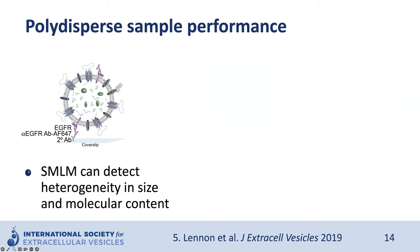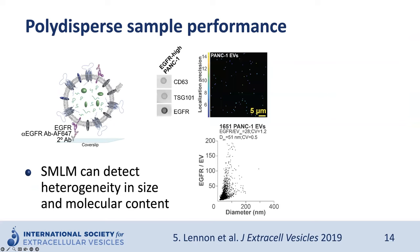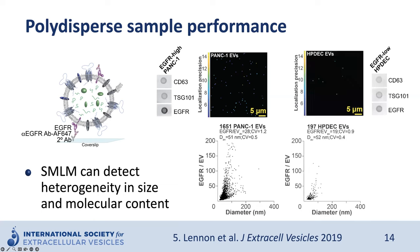SMLM provides a readout on two key features: EV size and detected molecular content. The combined information can be used to define EV heterogeneity. For example, we imaged EGFR-enriched vesicles detected using a fluorescently labeled antibody against EGFR. Many EVs were detected from the cultured pancreatic cancer cell line PANC-1, which has high EGFR expression. Each dot in the scatter plot represents a detected vesicle, reporting the number of detected EGFR molecules on the y-axis and EV size on the x-axis. Significantly fewer EVs were detected from cultured non-cancerous epithelial pancreatic cells that have lower EGFR expression, and the number of detected EGFR molecules in those vesicles was also significantly lower.